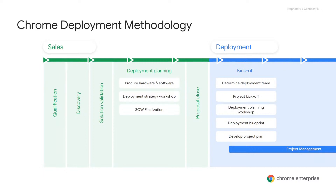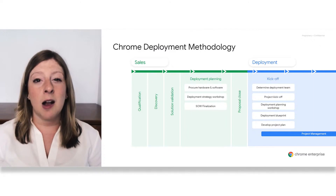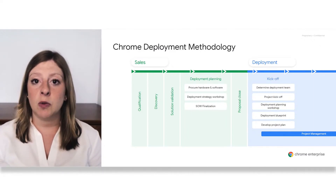As you determine what your deployment team will look like, we'll be able to identify what team members will be focused on what, and get a good sense of what your project plan will look like. The project kickoff will start initially with your account team, where you'll develop your deployment blueprint, develop your project plan, and figure out what milestones you want to have accomplished. A deployment can really last anywhere from three to six months, but depending on the organization, it can be shorter or longer depending on the size and the use cases and barriers you might run into.